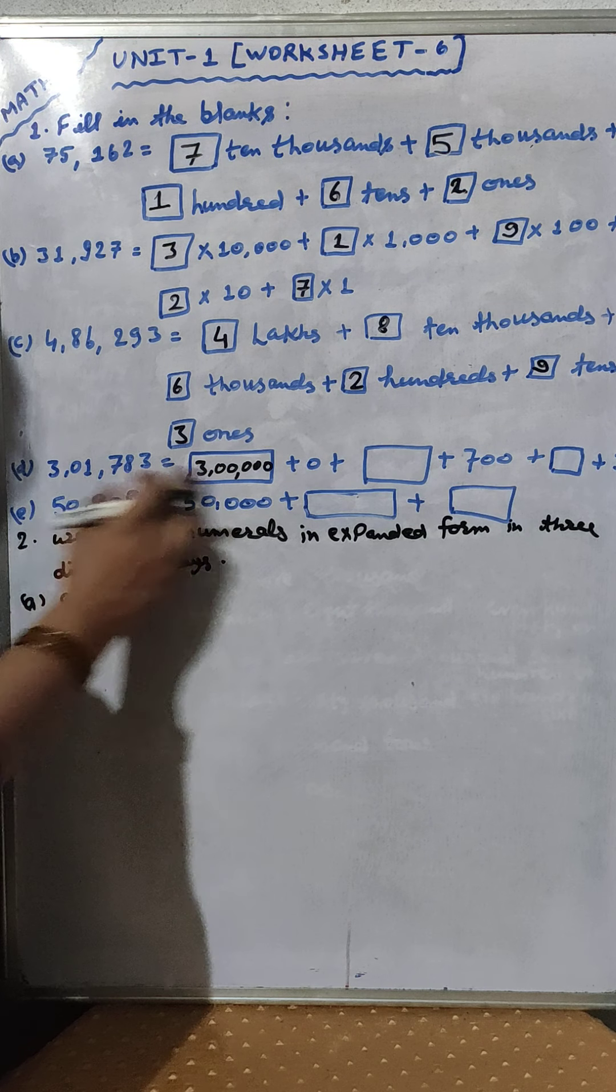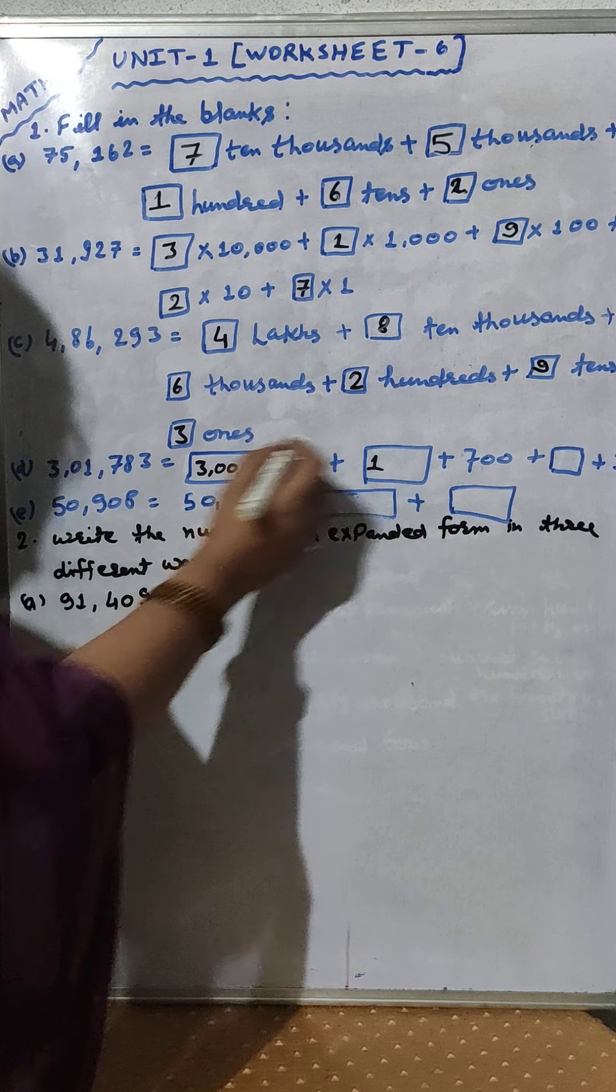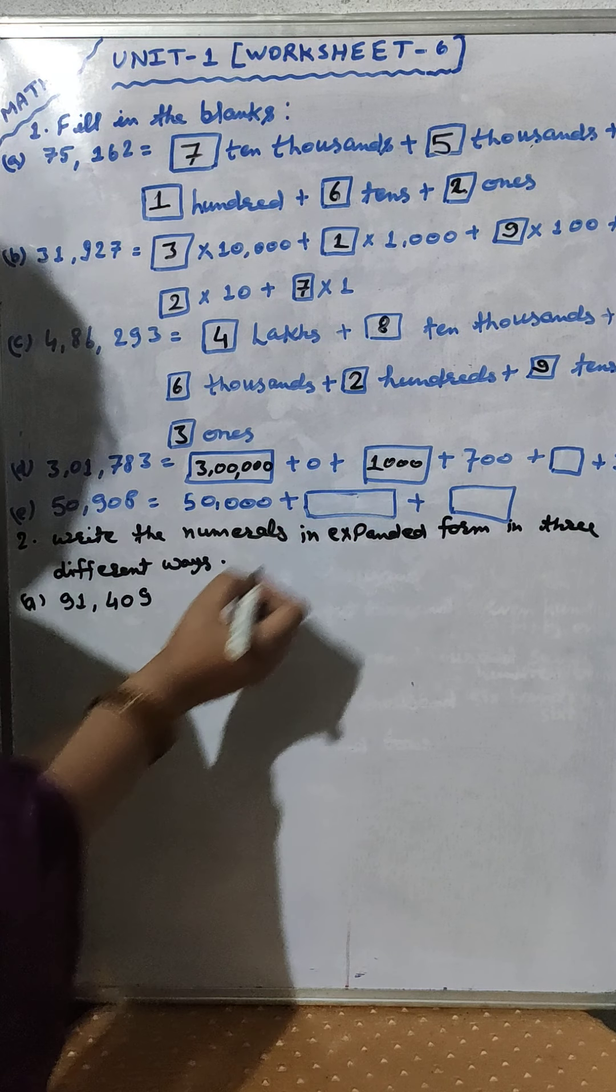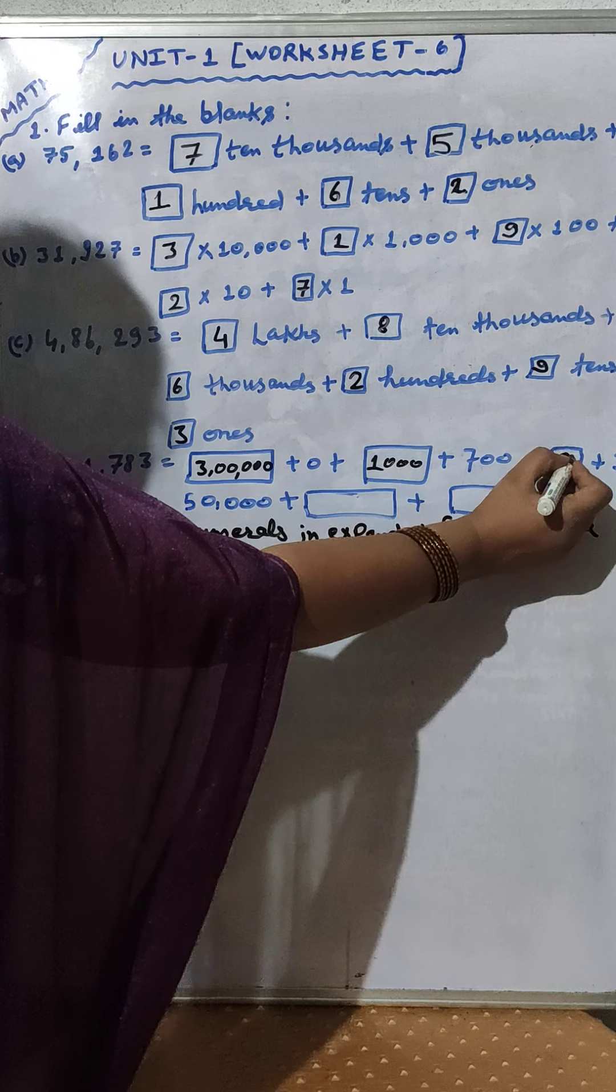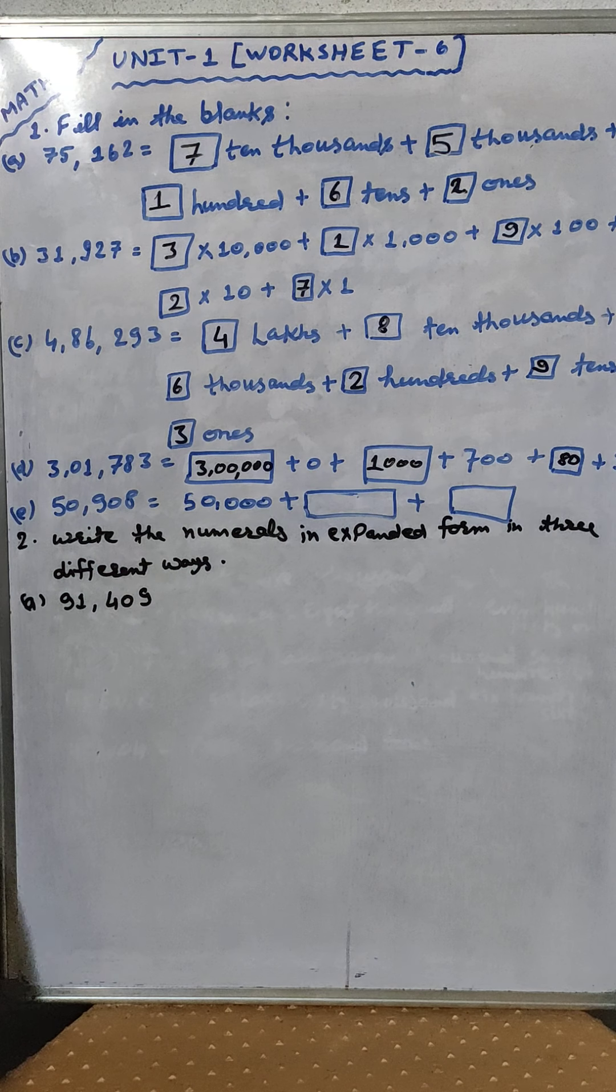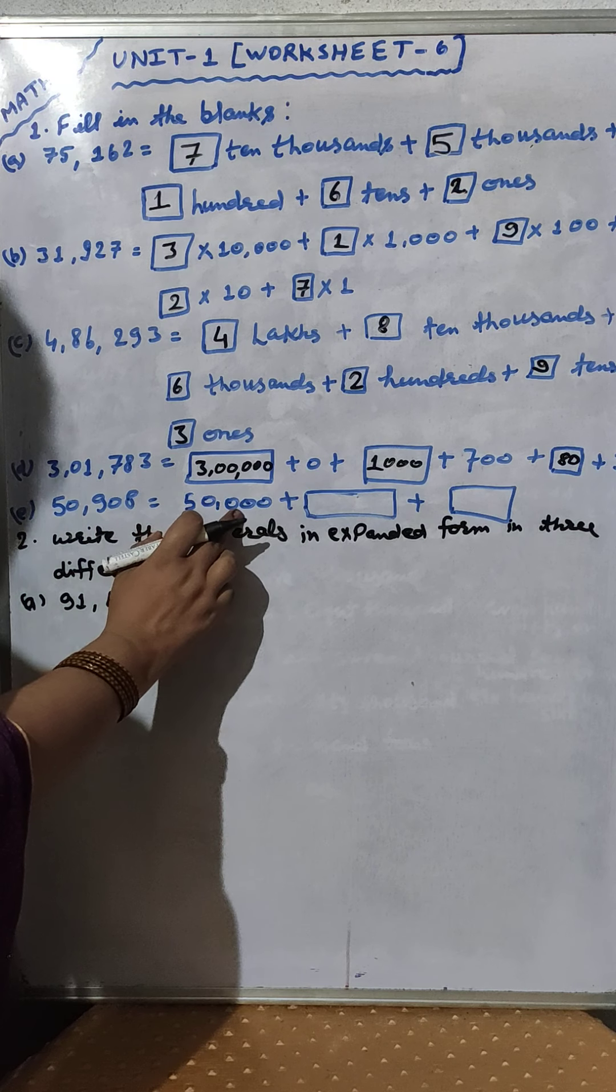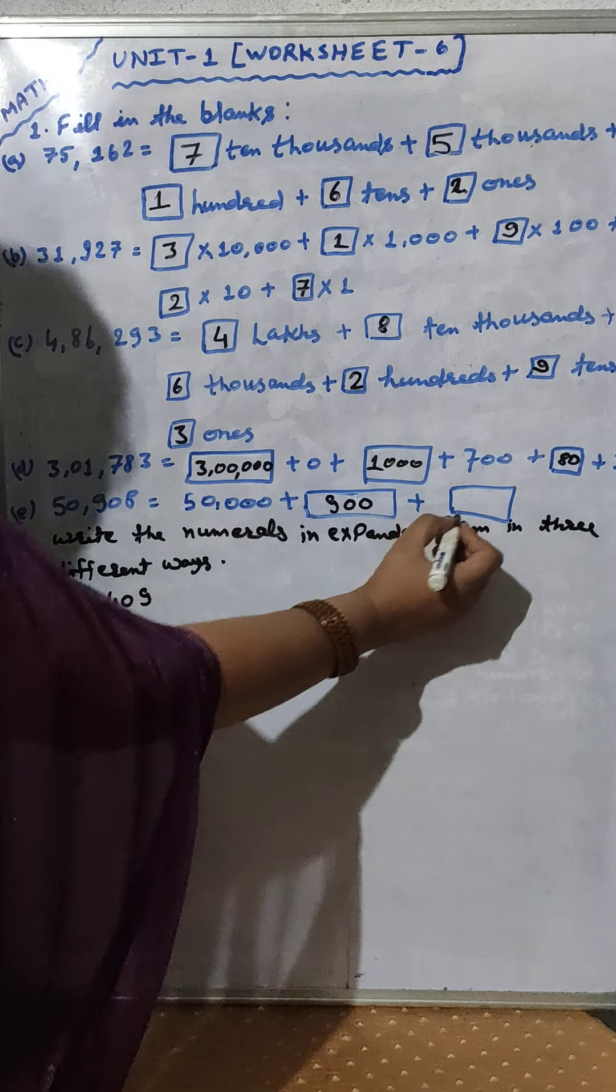Then after 0 plus 1. After 1 there are 3 digits: 1, 2, 3. 1000 plus 700 plus 80 plus 3. Then after 50,000 is given here, 900 plus 8.